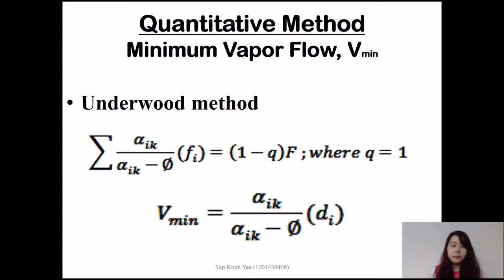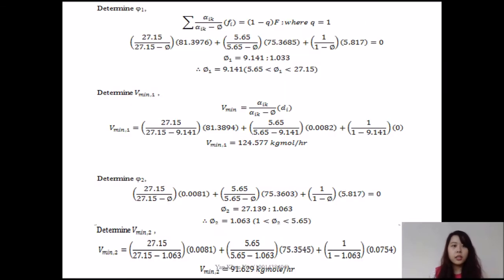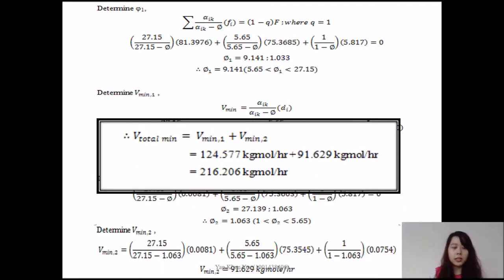Next is the quantitative method, which is minimum vapor flow V minimum. Underwood method has been used. There are two formulas. We apply this formula to find phi, then substitute into the formula for V minimum. For sequence 1, here are the calculations. We choose phi of 5.141 which is in the range, then substitute into V minimum 1. For V minimum 2, we use 1.063 which is in the range of 1 and 5.65.